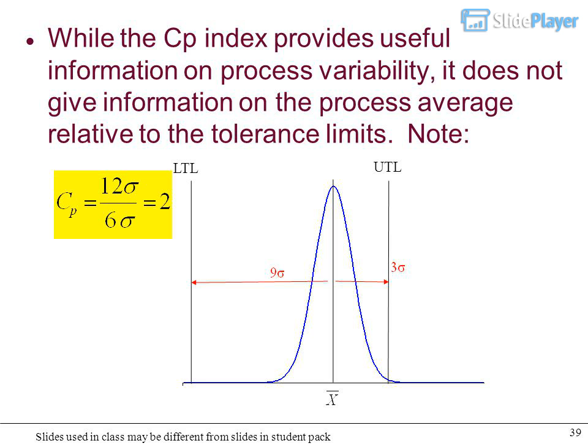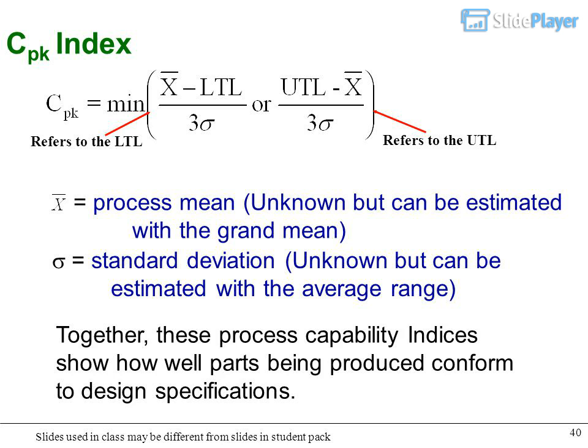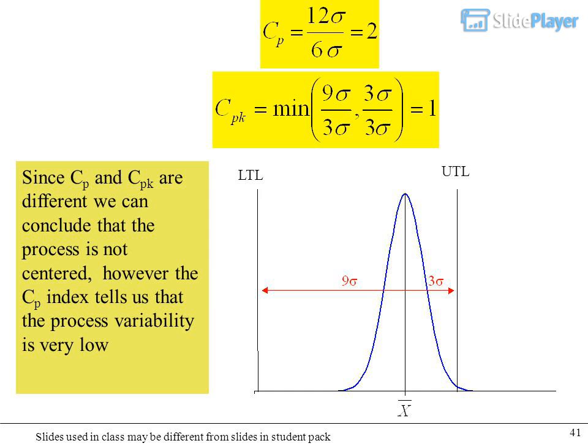While the CP index provides useful information on process variability, it does not give information on the process average relative to the tolerance limits. CPK index considers both LTL and UTL. The formulas involve process mean, which can be estimated with grand mean, and standard deviation, which can be estimated with average range. Together, these process capability indices show how well parts being produced conform to design specifications. Since CP and CPK are different, we can conclude the process is not centered, however the CP index tells us that process variability is very low.